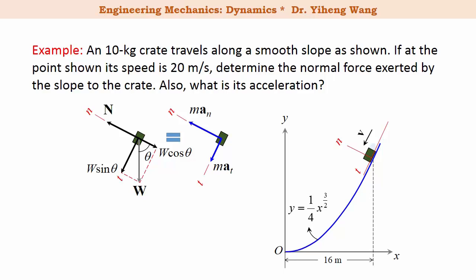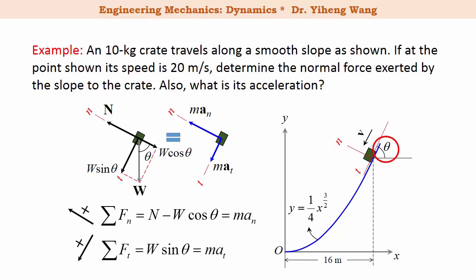We resolve the weight force W into a component W·sin(θ) along the tangential direction and another component W·cos(θ) along the negative normal direction. From geometry, we can tell that this θ is the same angle made by the tangential axis with the horizontal line. Now we can write our equations of motion: along the normal direction, N − W·cos(θ) = m·a_n; along the tangential direction, W·sin(θ) = m·a_t.